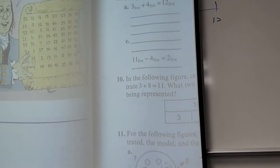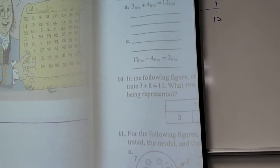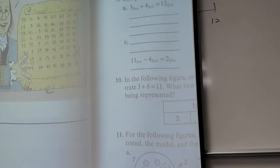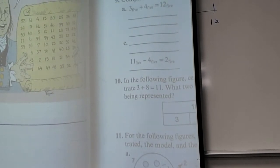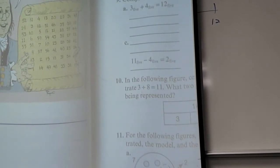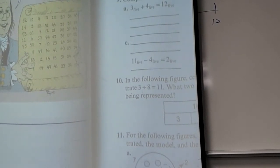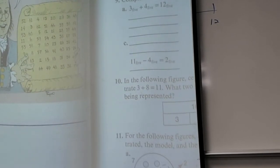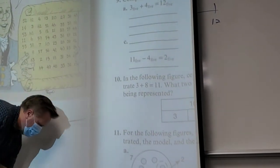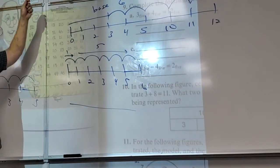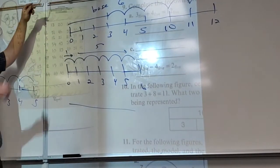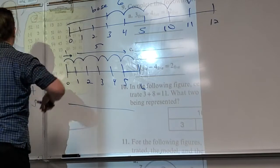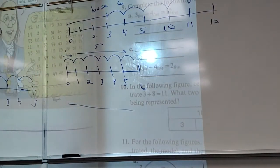Problem 14 is now done correctly — that's the missing addend model. Let's get into chapter four. There's a quiz on Wednesday.